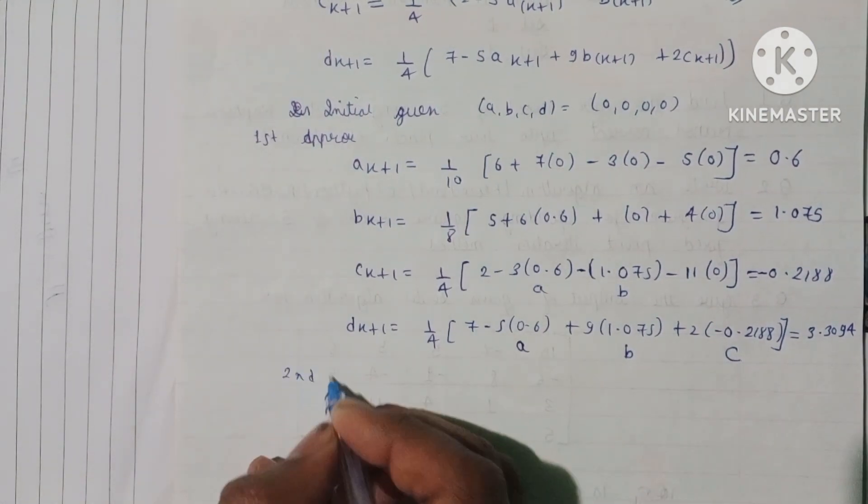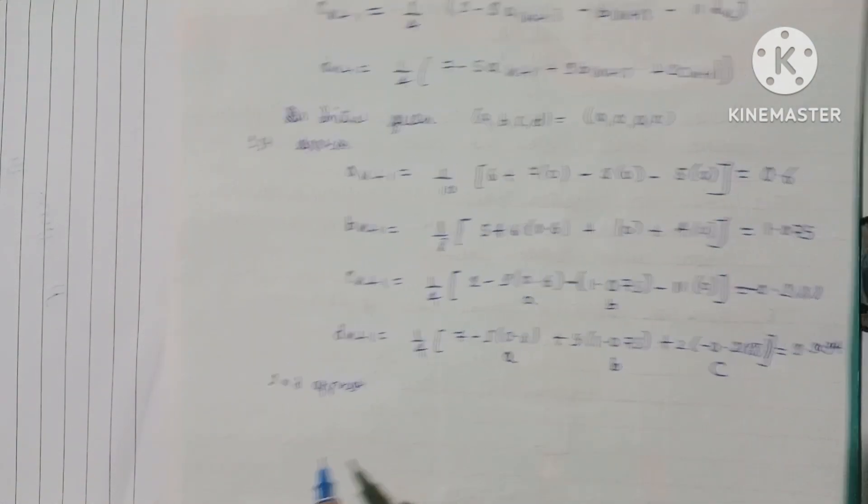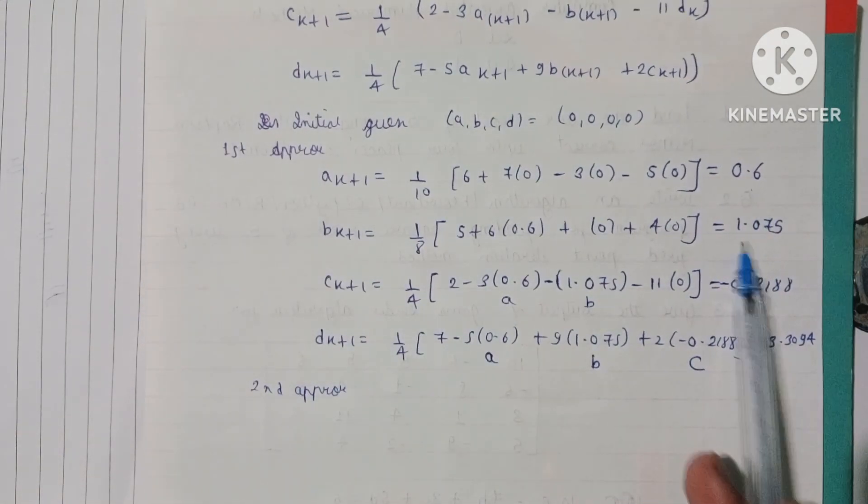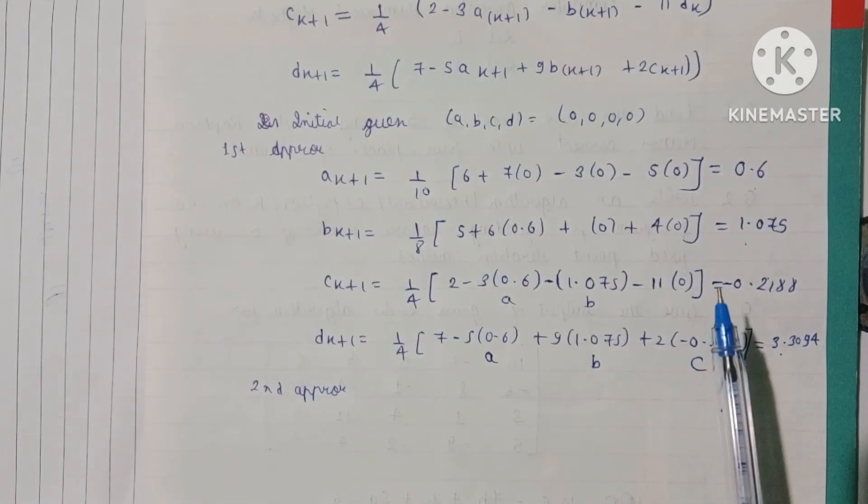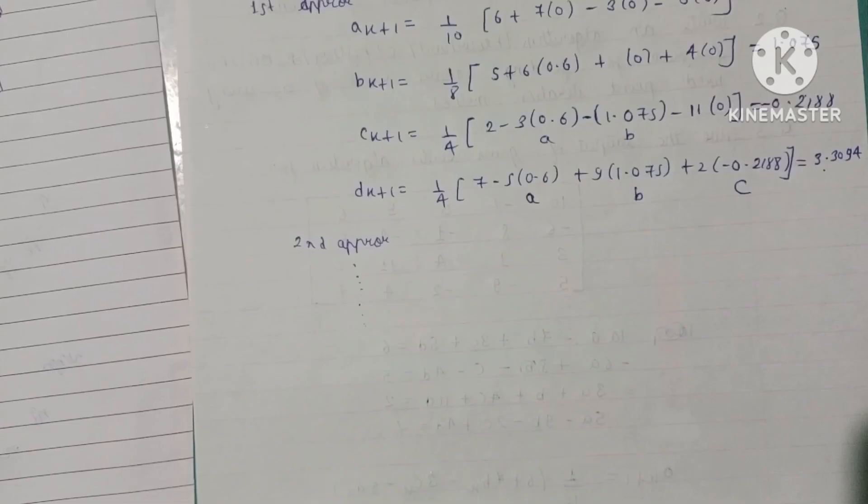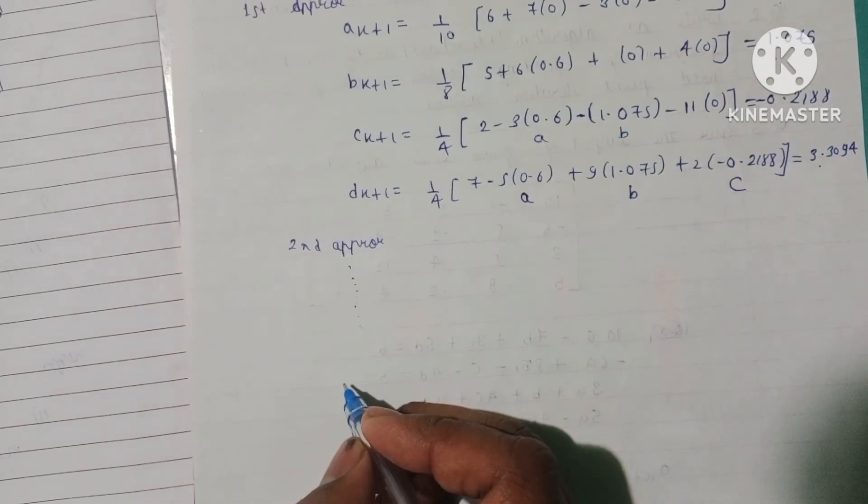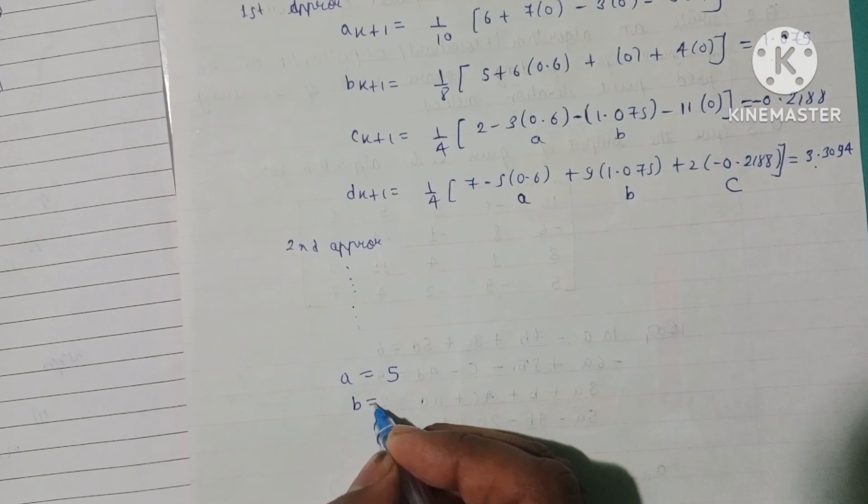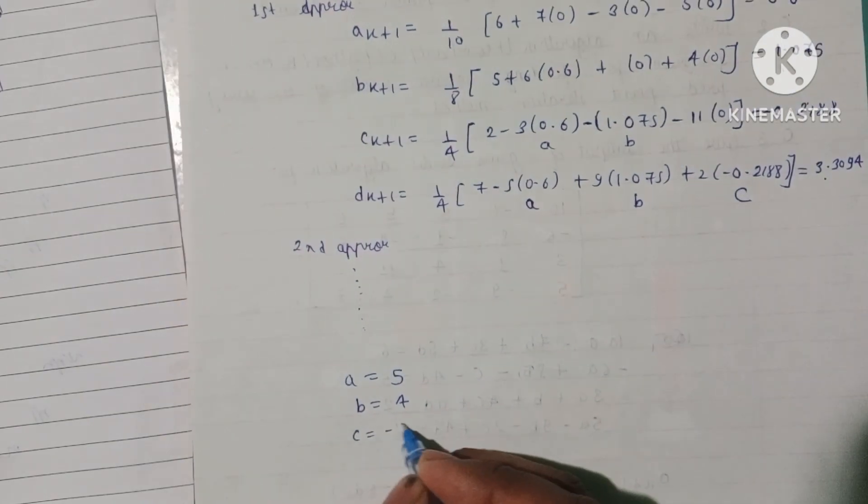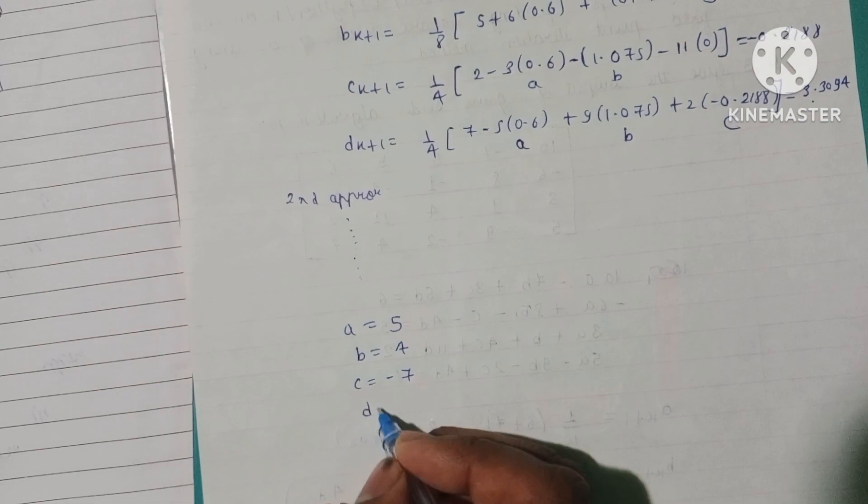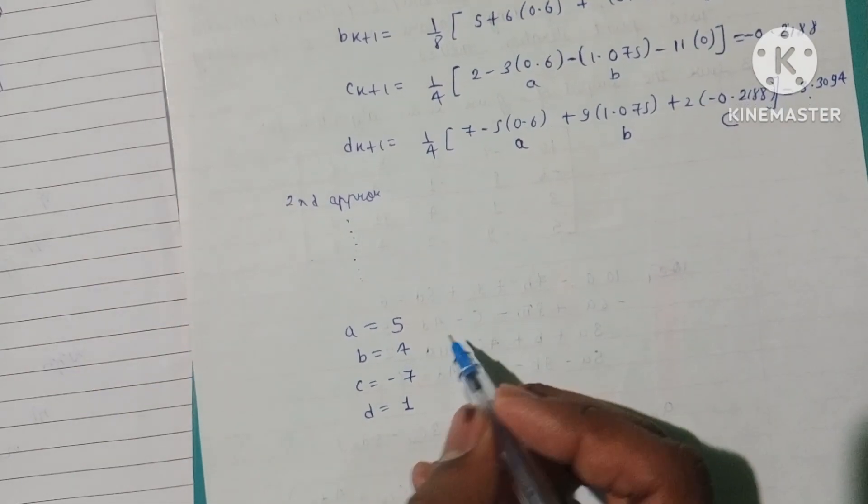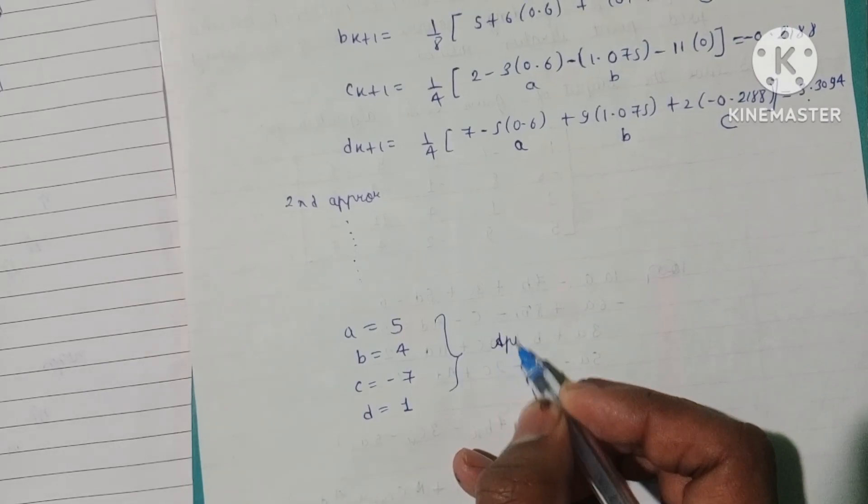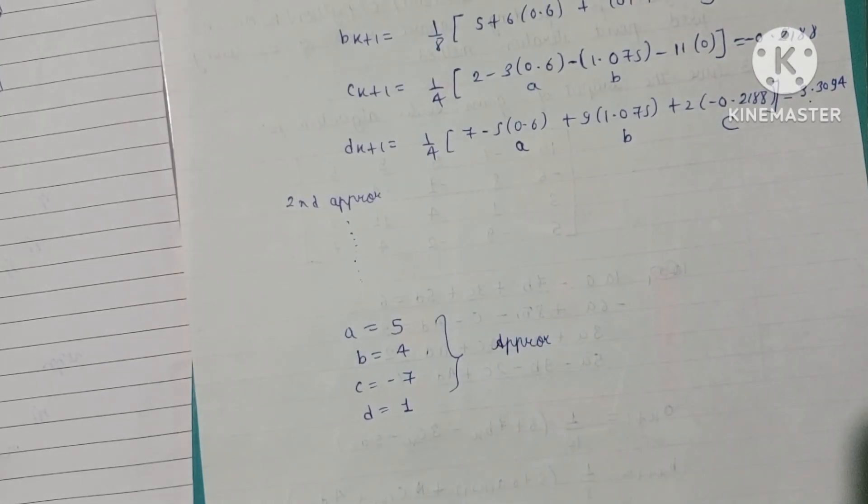Then similarly for the second approximation, we use these values and continue the process. This is the approximate value which we have rounded off, and we have found the algorithm and the program. So thank you.